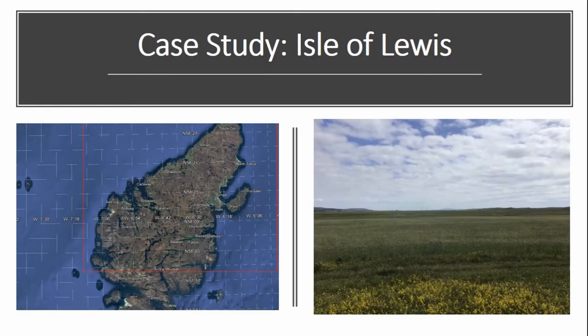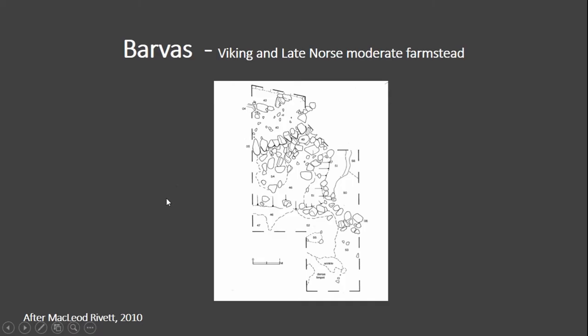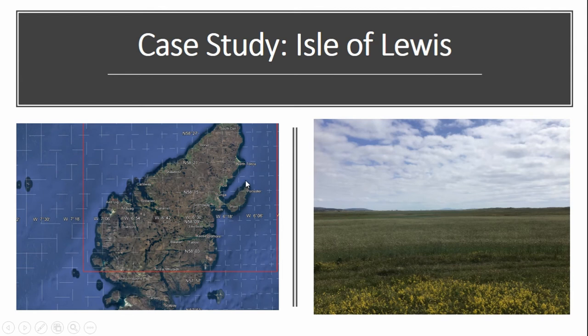Now, on to Lewis. Lewis is characterized by Machair plain along its western or eastern coast, punctuated by quite a few natural sheltered harbors, particularly where the modern-day town of Stornoway is. It's also where the famous Lewis Chessmen have come from, dated to the 12th century.